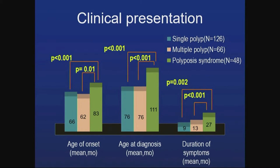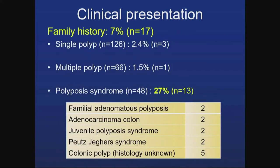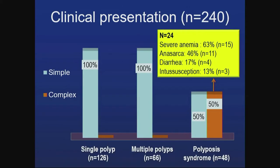Polyposis syndrome patients had significantly delayed age of onset and diagnosis compared to single and multiple polyp patients. Regarding family history, 27% of polyposis syndrome patients had a positive family history: two had family history of familial adenomatous polyposis, some had adenocarcinoma colon, juvenile polyposis syndrome, Peutz-Jeghers syndrome, and five had family history of unknown colonic polyps.